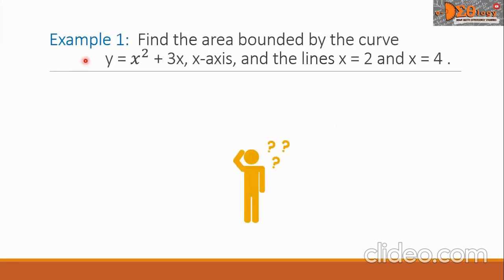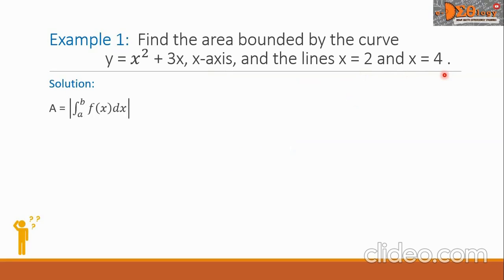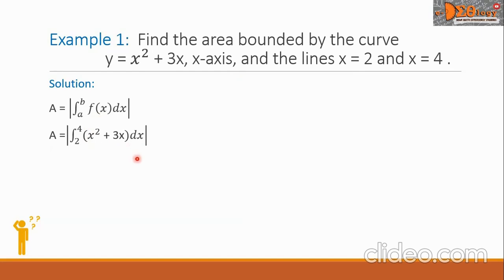Example 1: Find the area bounded by the curve y equals x squared plus 3x, the x-axis, and the lines x equals 2 and x equals 4. First, let us write our formula for the area, then substitute the corresponding values. So we have A equals the absolute value of the definite integral from 2 to 4 of x squared plus 3x dx.